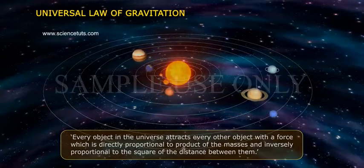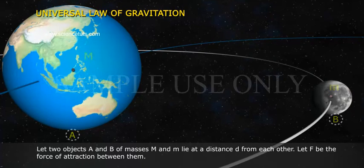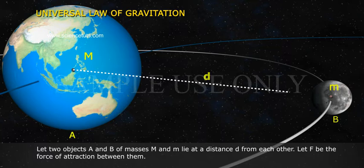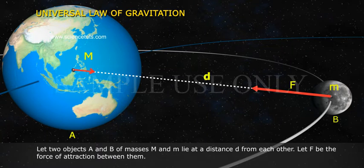Let two objects A and B of masses M and m lie at a distance d from each other. Let F be the force of attraction between them.